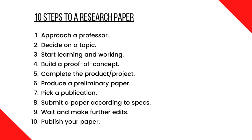So those are the 10 steps to publish your research. Step 1: approach a professor. Step 2: decide on a topic. Step 3: start learning the skills you need and start working towards a project. Step 4: produce a proof of concept. Step 5: produce a complete product or the completed version of your experiment. Step 6: prepare a preliminary paper — do the literature review, add pictures, graphs, whatever. Step 7: select a publication. Step 8: submit the paper according to the specifications. Step 9: wait for further edits from that publication. Step 10: your work is published.